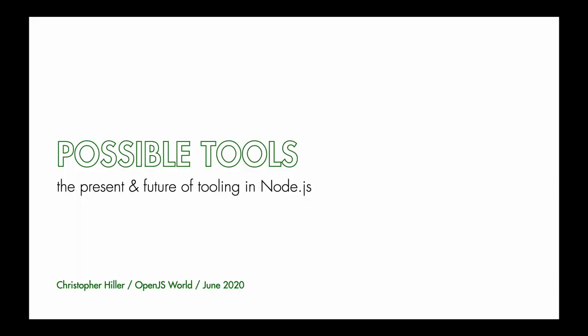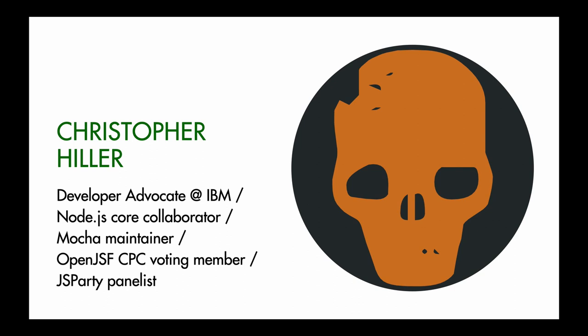Hi, I'm Chris Hiller. This talk is 'Possible Tools: the Present and Future of Tooling in Node.js.' My name is Chris Hiller, I'm a developer advocate at IBM. I go by Boneskull on the internet. I'm a Node.js core collaborator, I help maintain Mocha, which is a testing framework. I'm also an OpenJS Foundation Cross-Project Council voting member, and often a panelist on a podcast called JS Party.